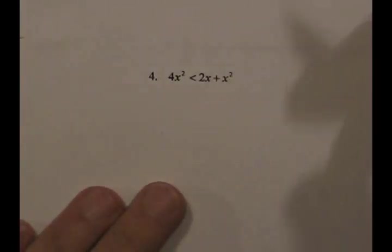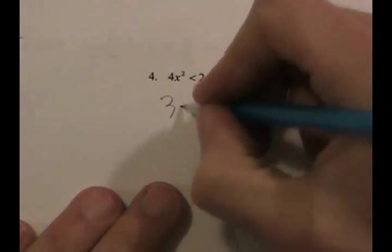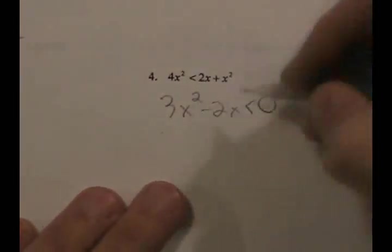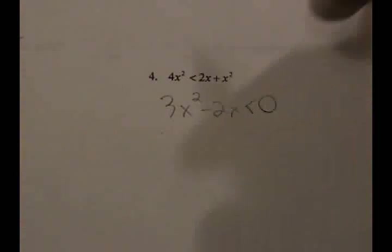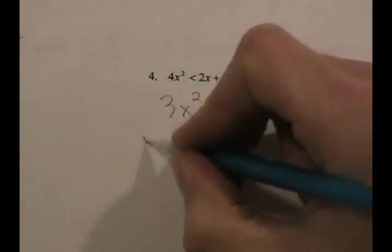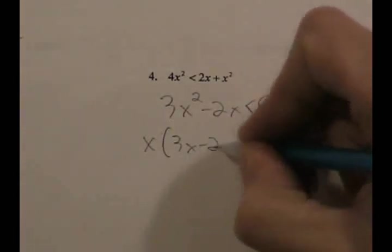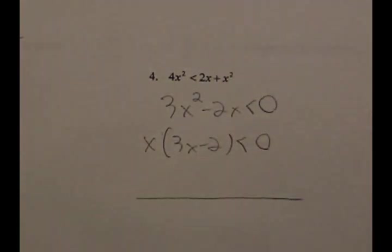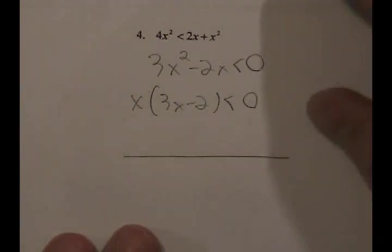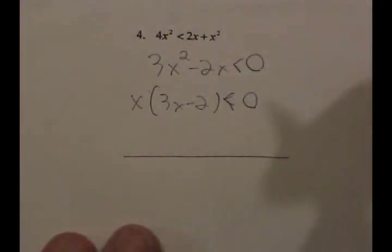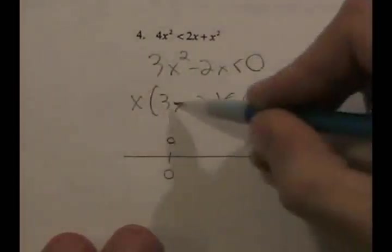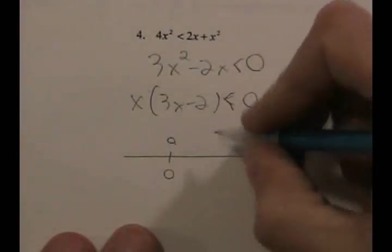For number 4, pull everything over to one side: four x squared minus x squared gives three x squared minus two x, less than zero. This is good news because we only have two terms. Factor it — we can take out an x — to get x(3x - 2) less than zero. Then mark out the number line with the values that make this expression equal to zero. At zero the expression is zero, and setting 3x - 2 equal to zero gives x equals two-thirds.